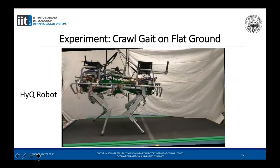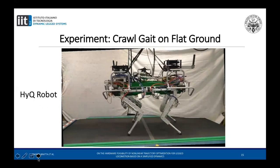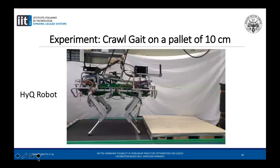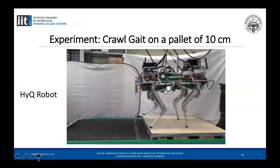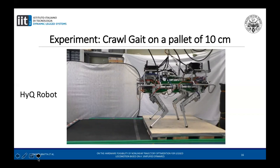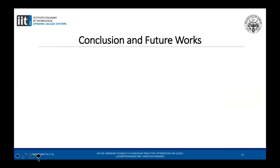Hardware experiments have been performed on the HyQ robot of the Dynamic Legged System Lab. The first video represents the integration of TOWR in our framework to perform four cycles of crawl. The second experiment shows HyQ walking up to a pallet of 10 cm. It is the first time a trajectory computed by TOWR for non-flat terrains has been performed by a real robot. This has been possible only thanks to the introduction of our collision with environment avoidance and foot size constraints, as we saw in the simulations.